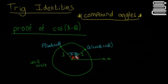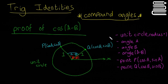We also have the angle A minus B, which is the angle in between the two radii. So A minus B gives us that angle. As a checklist for your diagram: the unit circle with radius 1, angle A, angle B, angle A minus B, point P with coordinates (cos A, sin A), and point Q with coordinates (cos B, sin B). If you want to learn why those are the coordinates, you can go back to our video about the unit circle.